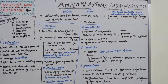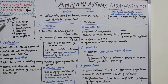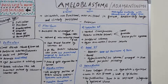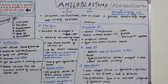Histological classification of ameloblastoma is divided into six types: follicular, plexiform, acanthomatous, granular, basal cell, and desmoplastic — based on histological appearance.